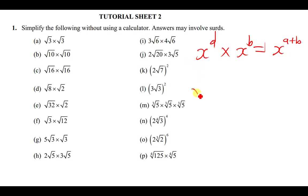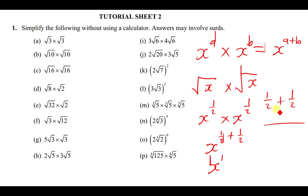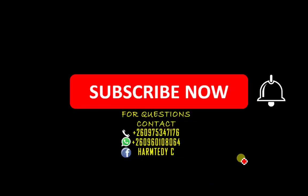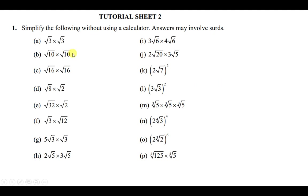For example, √x × √x = x^(½) × x^(½). Since we have the same base, we add the powers: ½ + ½ = 1, so the result is x^1 = x. This means the square root of any number multiplied by itself gives back that number.